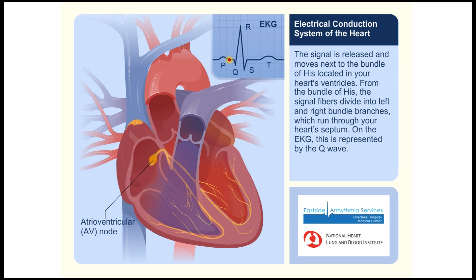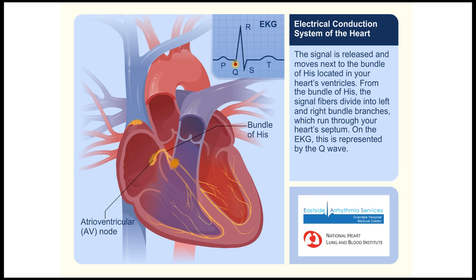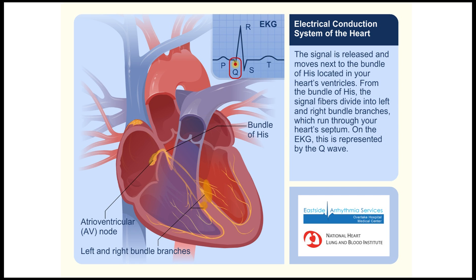The signal is released and moves next to the bundle of His, located in your heart's ventricles. On the bundle of His, the signal fibers divide into left and right bundle branches, which run through your heart's septum. On the EKG, this is represented by the Q wave.